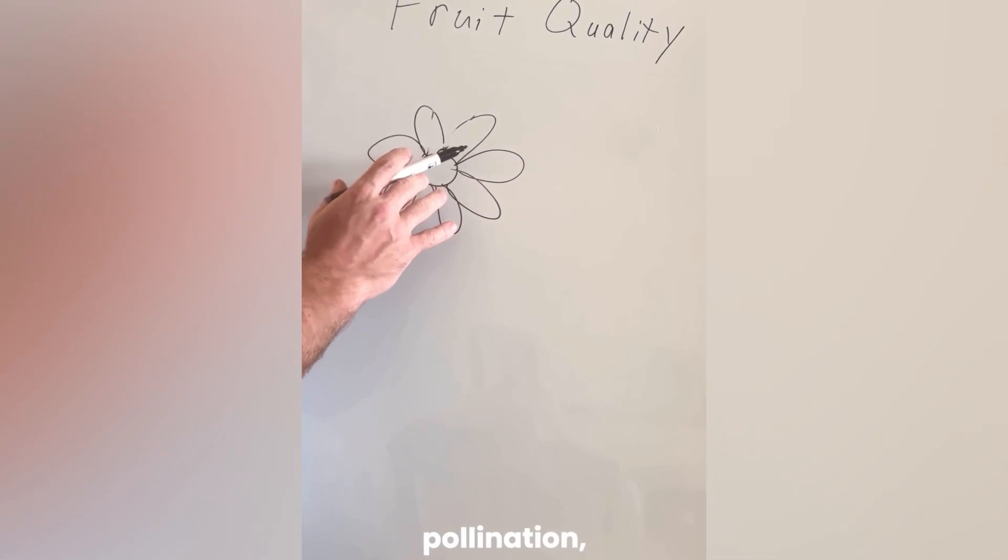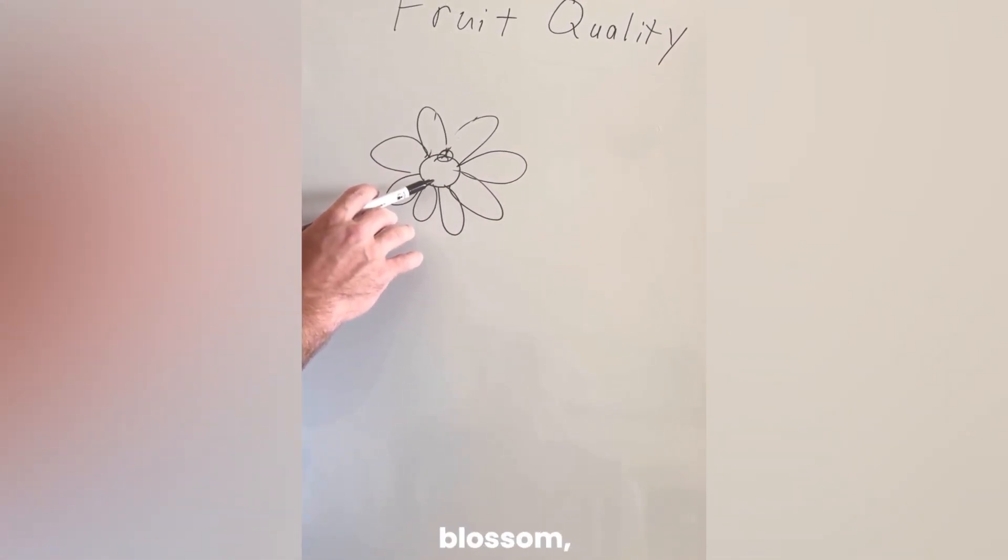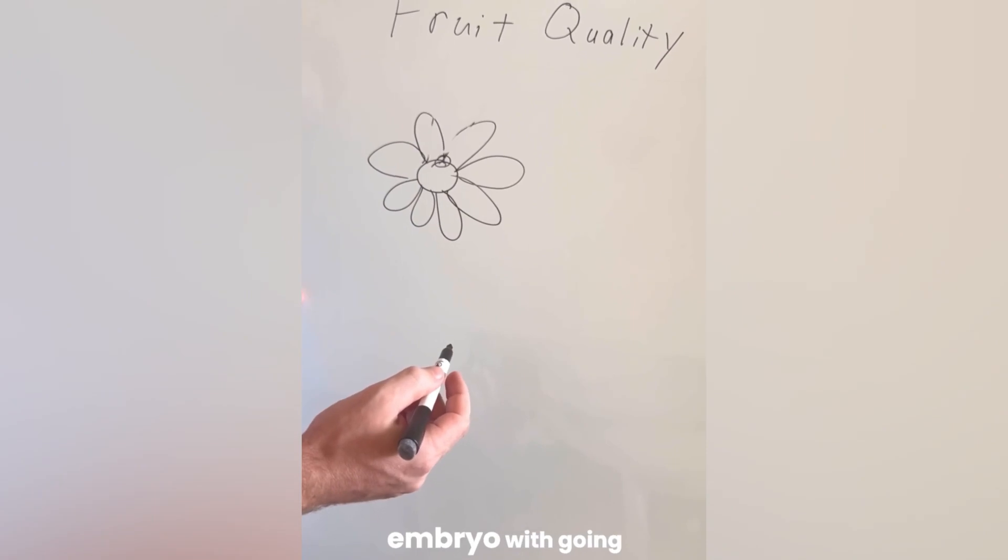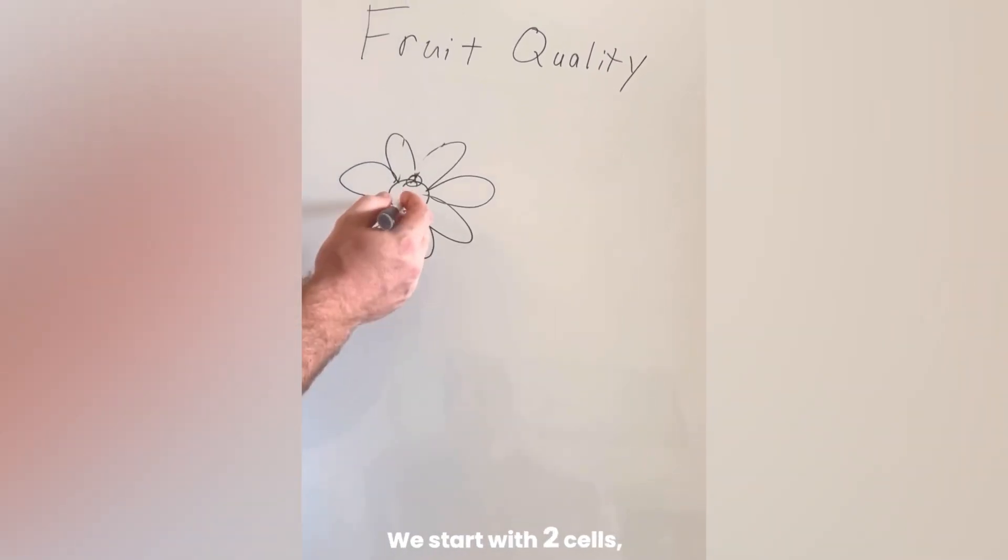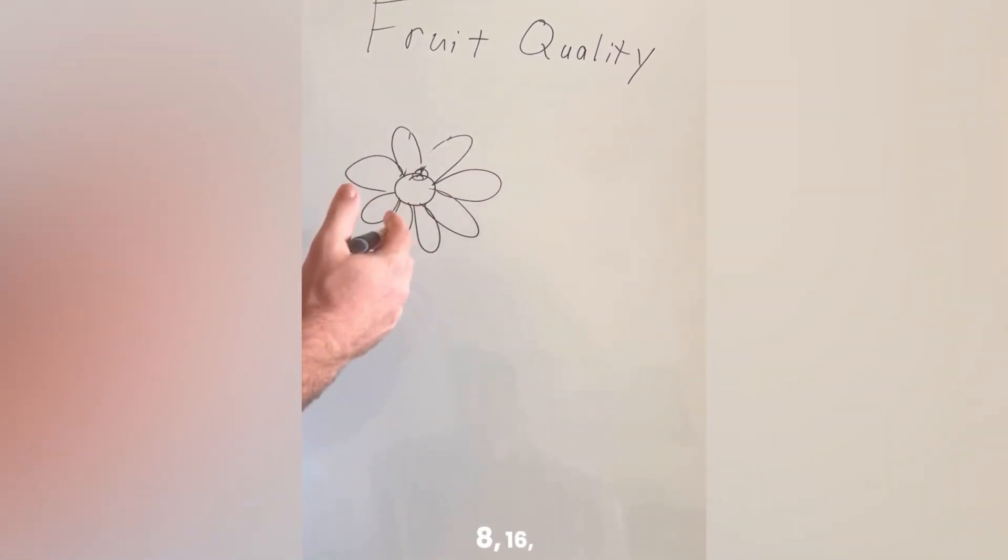Immediately after pollination, we have this fertilized blossom, this developing embryo going through a very rapid cell division stage. We start with two cells, then we go to four, eight...